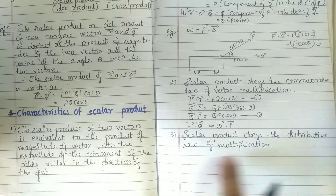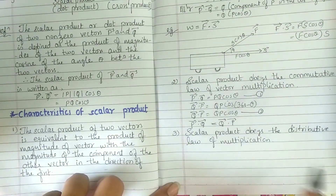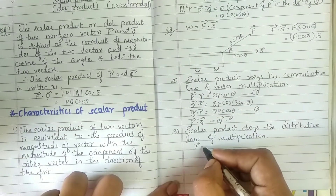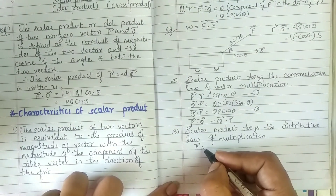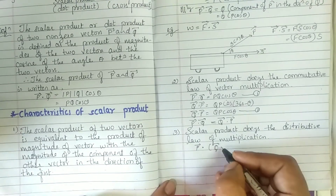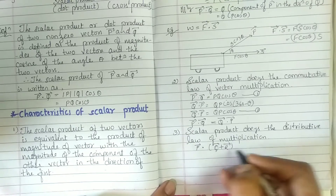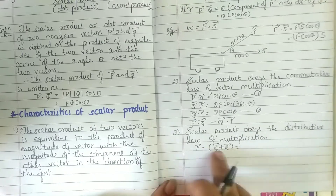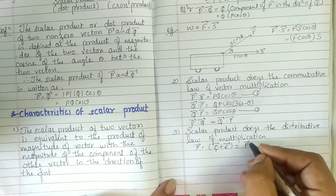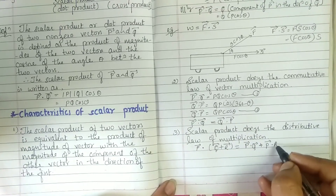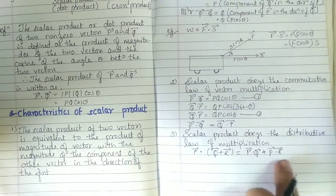Scalar product obeys the distributive law of multiplication. That means P dot (Q plus R) equals P dot Q plus P dot R. You open the bracket by multiplying. This is known as the distributive law.